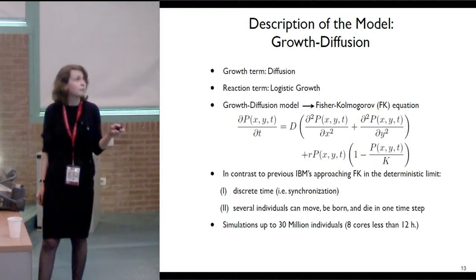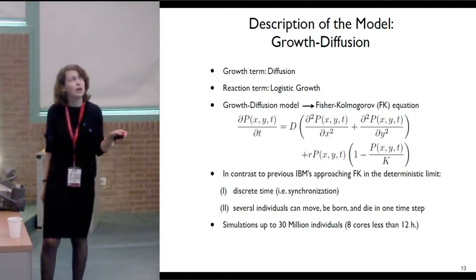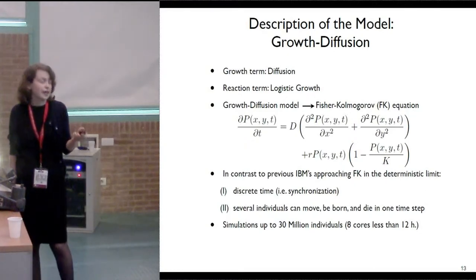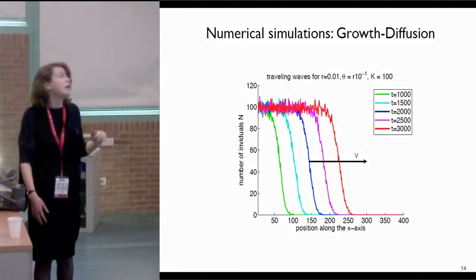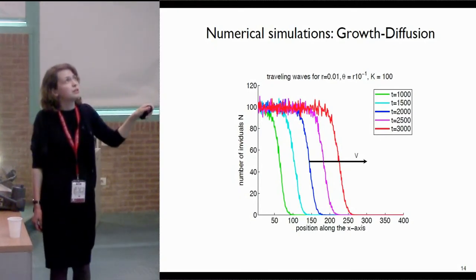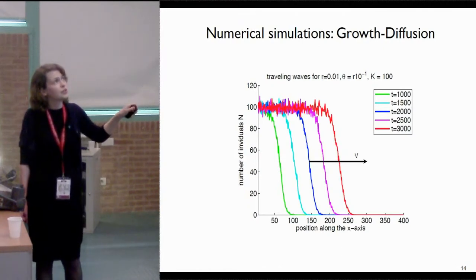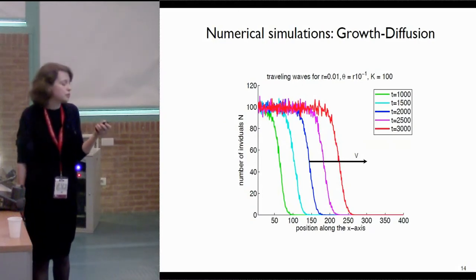Due to this discrete time step, we can parallelize this simulation, and that allows us to simulate up to 30 million individuals on 8 cores in less than 12 hours. We start a simulation with 100,000 individuals and grow to 30 million, taking less than 12 hours. Here is an example of a traveling wave from the growth-diffusion model: on the y-axis we have the number of individuals, on the x-axis the position, and different lines represent snapshots at different time steps. The wave profile is noisy, and after a certain transition time the speed of the traveling wave is constant, as expected for a growth-diffusion model.